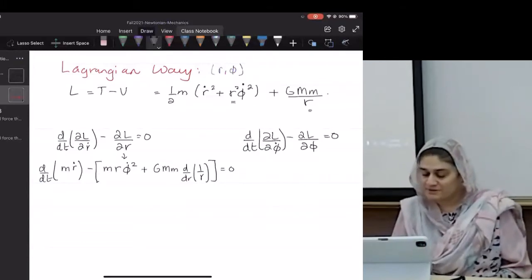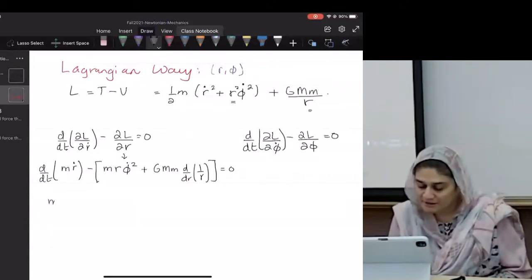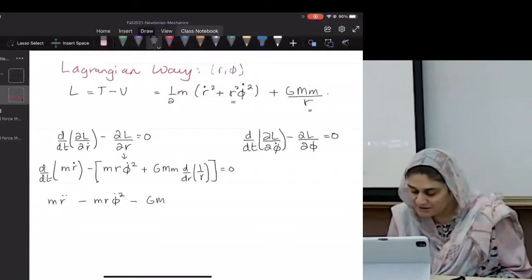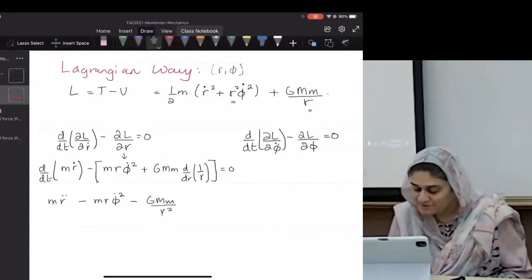So since this is being differentiated, I'm going to get m·r̈ minus m·r·φ̇² minus GMm/r². This is minus. This will give me another minus and this will be plus.